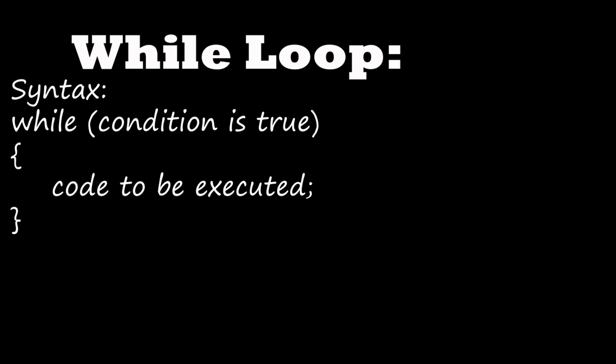Next one is while loop. While loop executes a block of code until the condition specified in the while statement is false. It is similar to other loops like for loop. Here, 'while' is followed by a condition — if the condition is true, the code or statement given below will be executed. If the condition is false, that won't be executed.